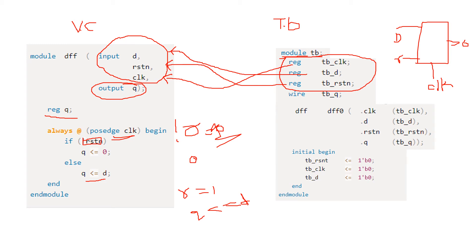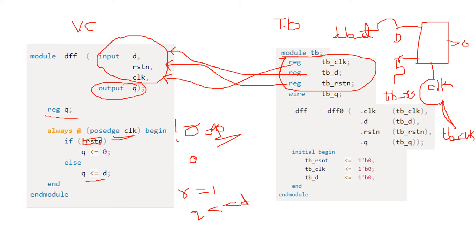In the block diagram of the D flip-flop, I am connecting the test bench clock to the original clock, test bench D to the original D input, test bench reset to the original reset, and the output connects to test bench Q. So I am connecting my required signals to the various inputs and outputs of the original block — that is what test bench is.